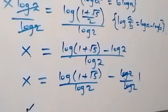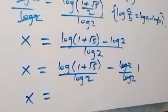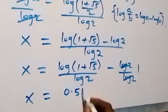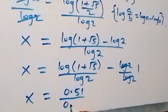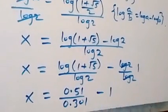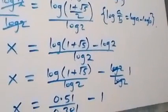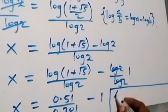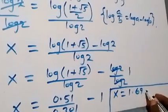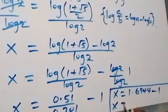Then from here, log of 1 plus root 5 gives us in decimal approximately 0.51, and log 2 is approximately 0.301. Then when we divide: 0.51 over 0.301 gives us 1.6944. So x equals 1.6944 minus 1, and therefore x equals approximately 0.6944.